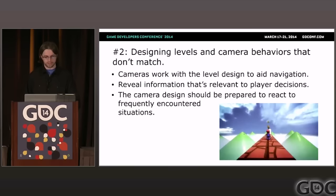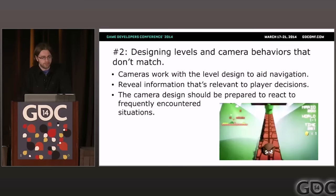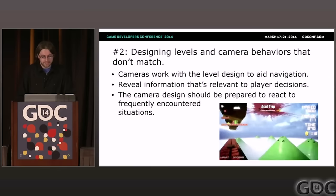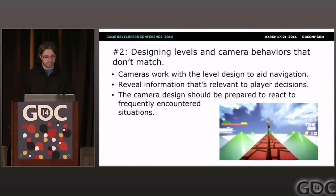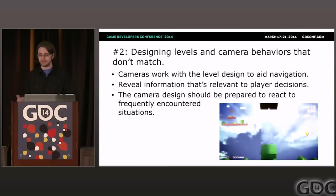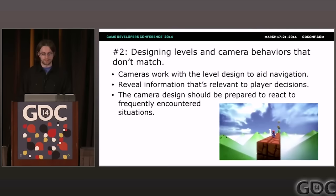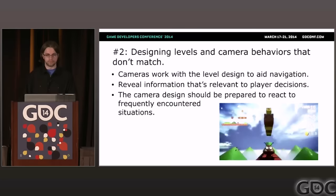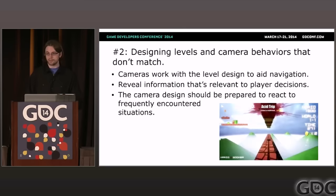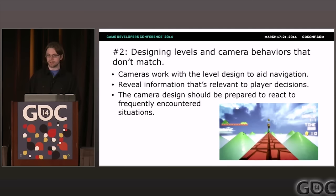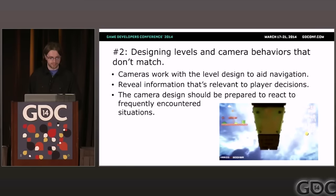Problem two: designing levels and camera behaviors that don't match. Level design and camera design are closely related disciplines that need to cooperate to help players navigate. If you know the camera angle ahead of time, you can design the entire level around that. With a dynamic camera angle, you have to make sure levels gracefully flow from one point to the next with the camera easily showing where to go. I like this video because the author chose to include the original side-scrolling game in the corner so the player can tell what's going on — a clue that this is not a good camera for this game.